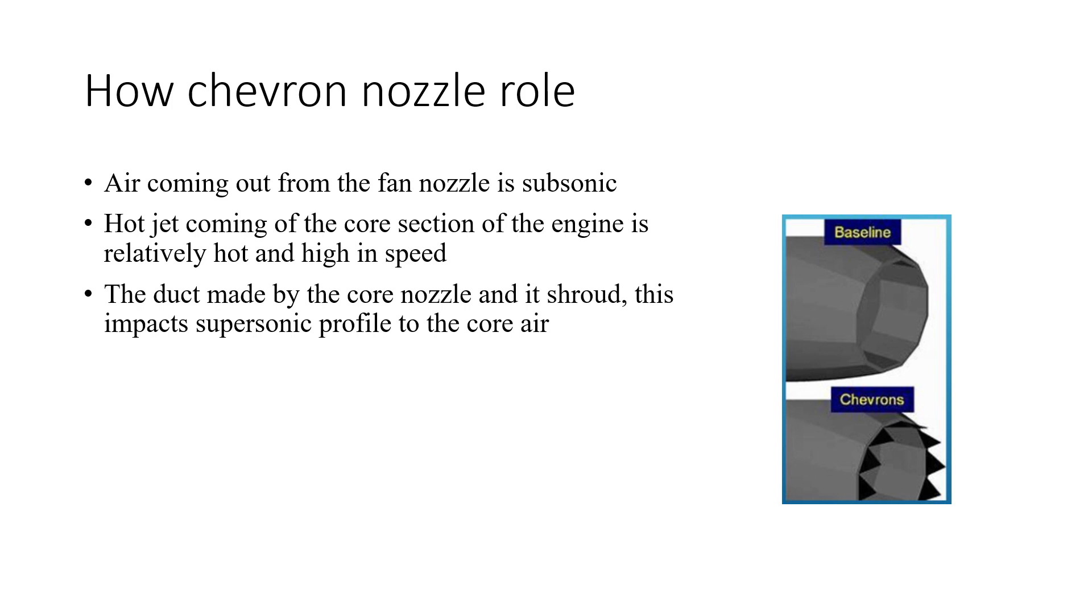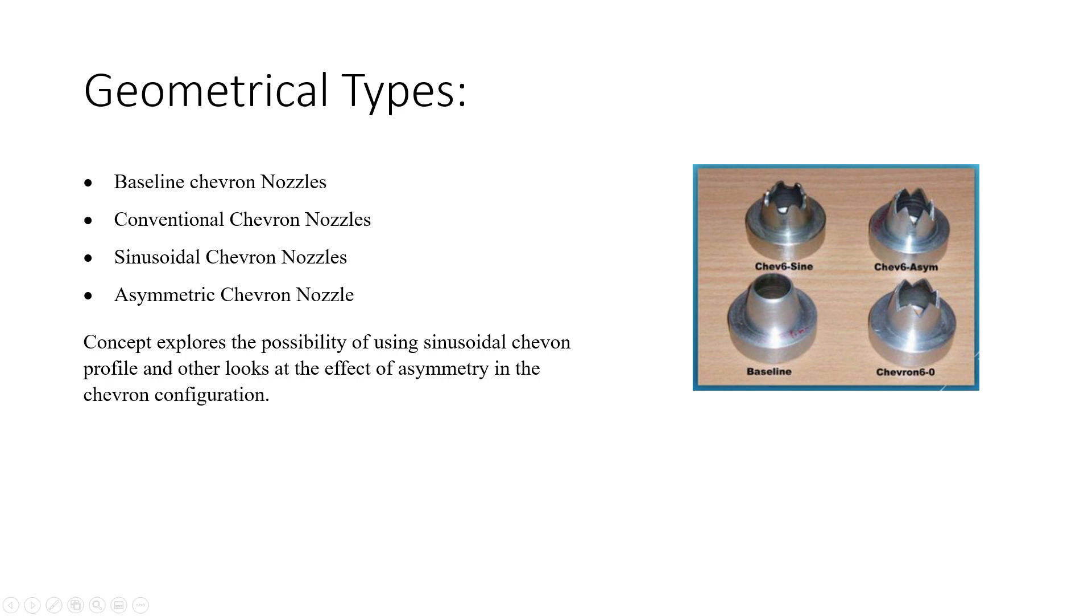The air coming out from the fan nozzle is subsonic, whereas the jet coming from the core section of the engine is relatively hot due to the combustion energy. In addition, it is high in speed due to the duct made by the core nozzle, and this impacts supersonic profile of the core air.